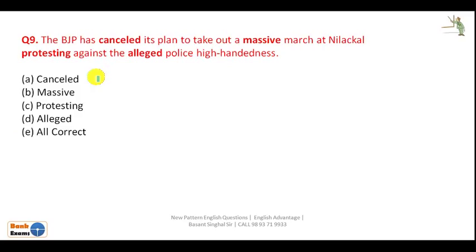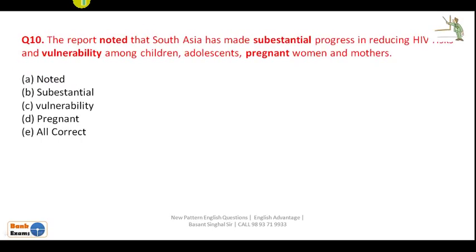Question 9: 'Protesting' is correct, 'alleged' is correct, 'massive' is correct, but the spelling of 'cancelled' is wrong — C-N-C-E double L-E-D is incorrect. Question 10: The report noted that South Asia has made 'subsequent' progress — the spelling of 'subsequent' is wrong here. The correct word is 'substantial' — S-U-B-S-T-A-N-T-I-A-L. The answer is B.